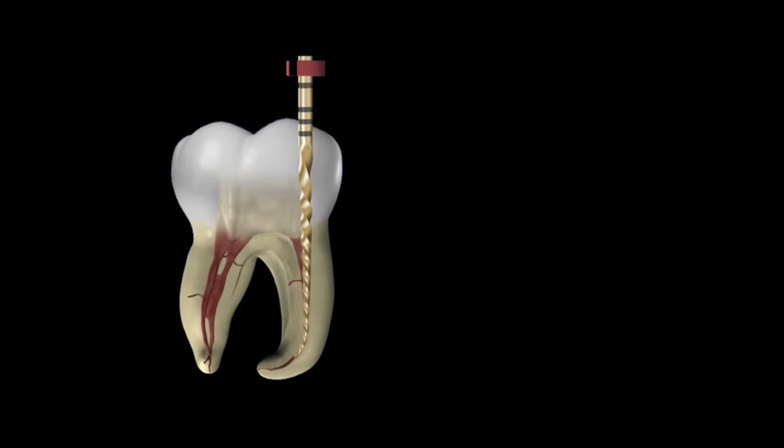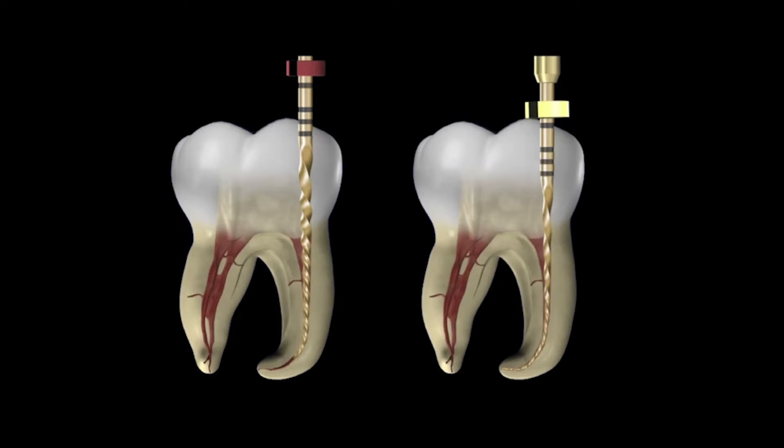The assumption here is we have a smooth, reproducible glide path, and the canal has been secured. We can carry the primary file down the canal, but what if it really won't advance? What if it really won't move so that the rubber stop goes down on the selected reference point, which would suggest the file is at length? Well, in those instances, we can go to the small. Because the small has a tip of only two hundredths of a millimeter — it's a 20 — it will easily crawl along the glide path and carve its shape to length.